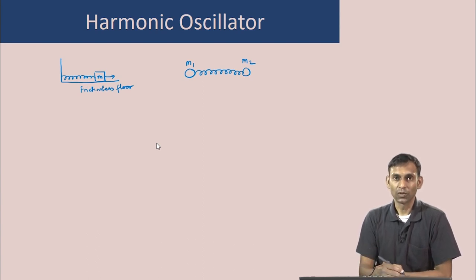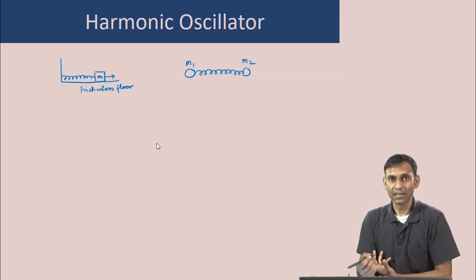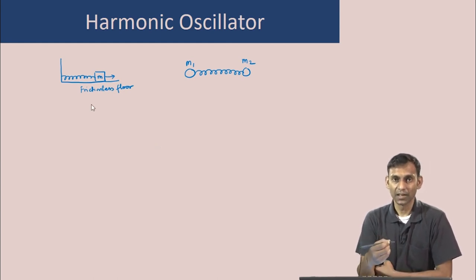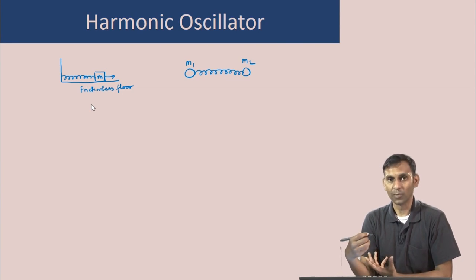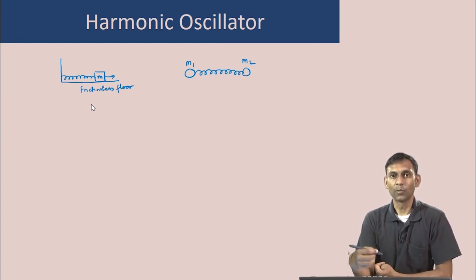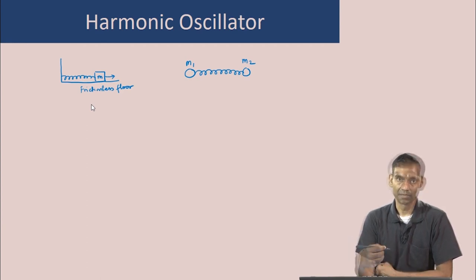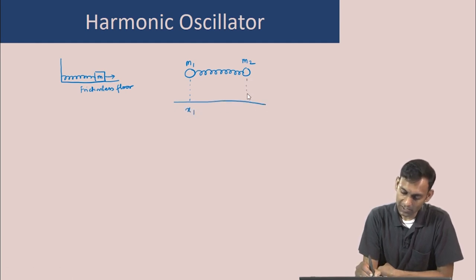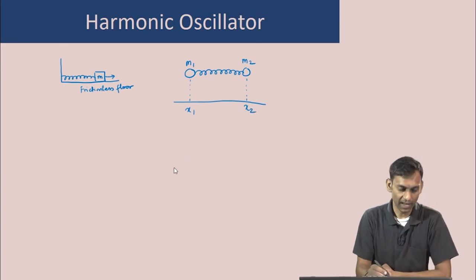Our goal is to show that this system of two particles attached by a spring is actually identical to the system of one particle attached by a spring and another problem of an overall translation of the center of mass. Let us map this problem of two particles attached by a spring to a harmonic oscillator problem. Let us assume that these two masses have positions x1 and x2 for masses m1 and m2.